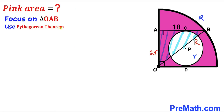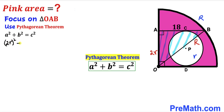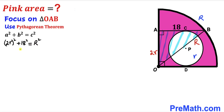Let's focus on right triangle AOB and apply the Pythagorean theorem: a² + b² = c². In our case, uppercase R is the hypotenuse, so we get: (2r)² + 18² = R².